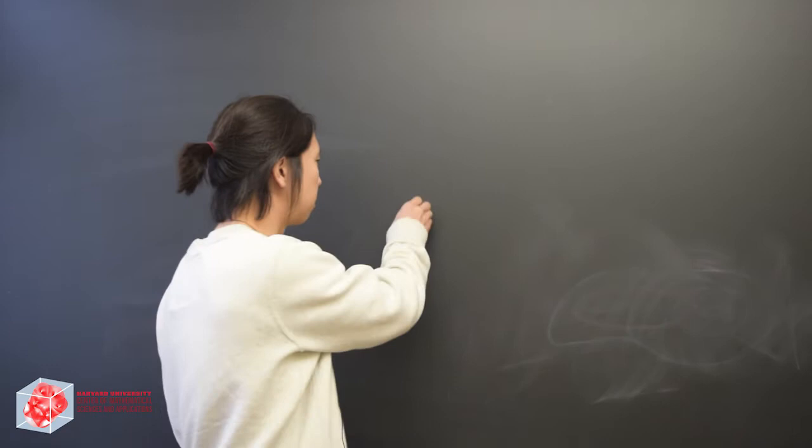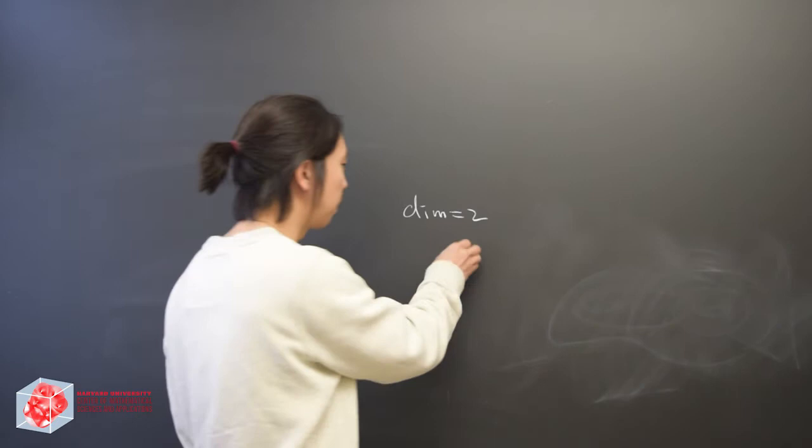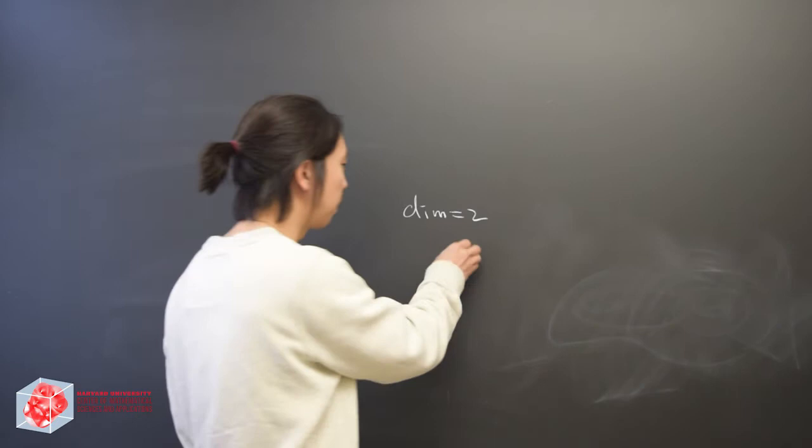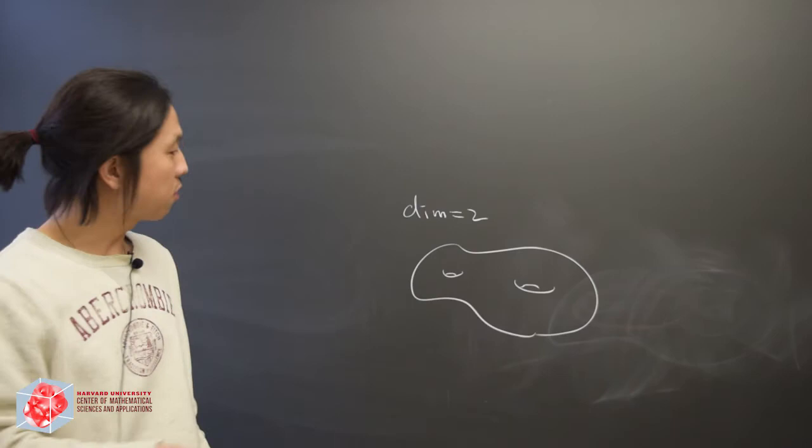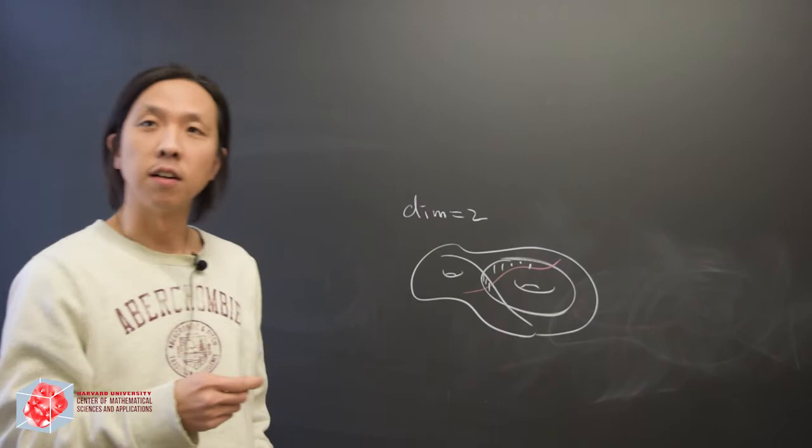In the simplest case, in dimension 2, a symplectic manifold is simply a surface with some genus like this. Lagrangians are circles, either circles or some curves, and if you have a bunch of them, you can actually count these polygons, which are the holomorphic disks I mentioned.